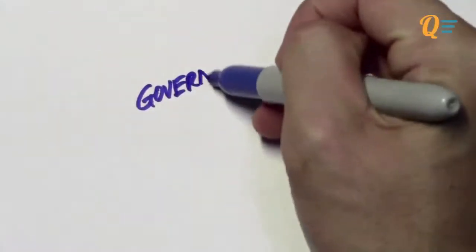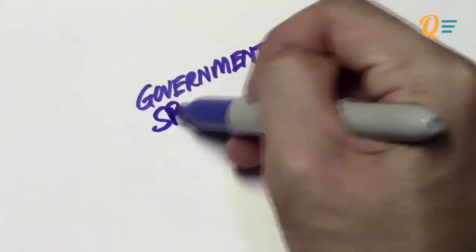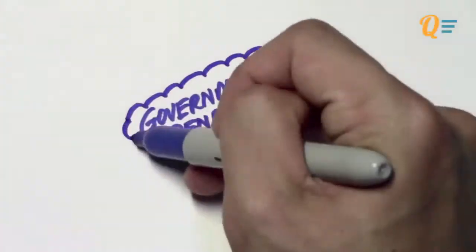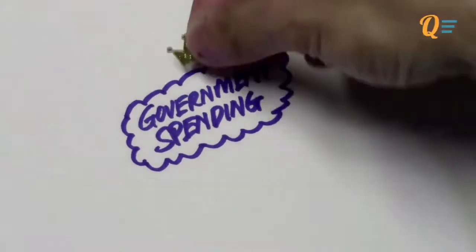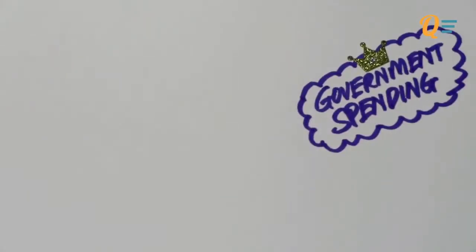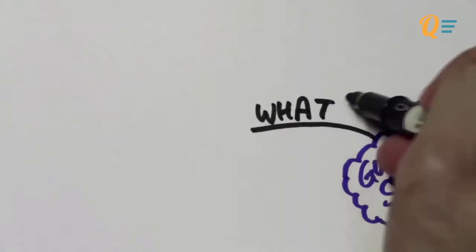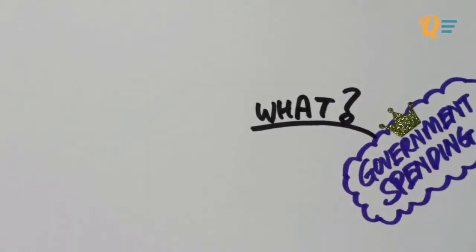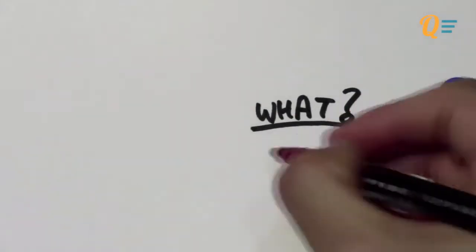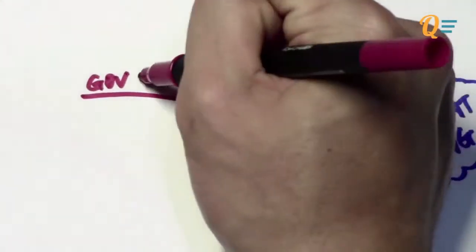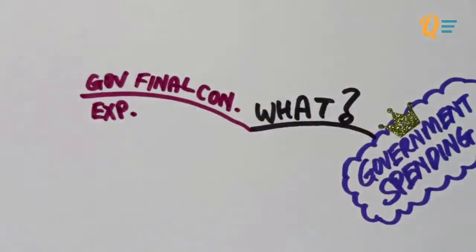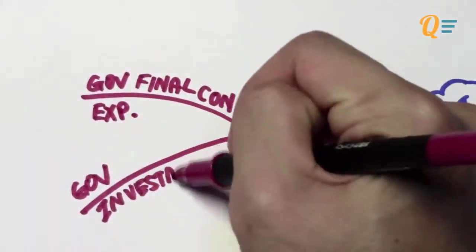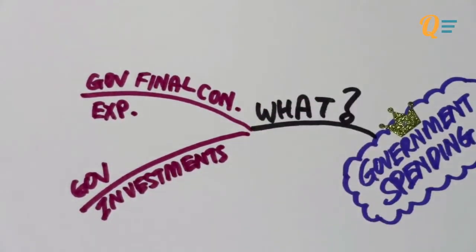Today we're going to talk about government spending, which is the third component of the national accounts — also another term for aggregate expenditure. There are two types of government spending: the first is known as the government's final consumption expenditure, and the second is known as government investment activities.